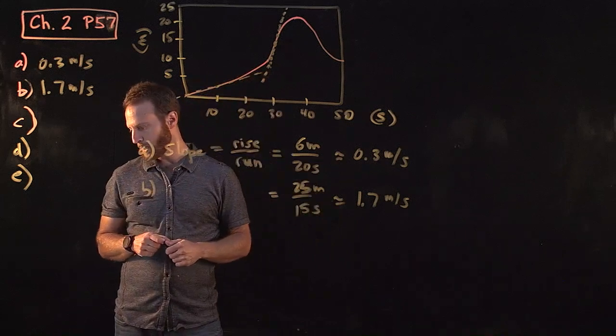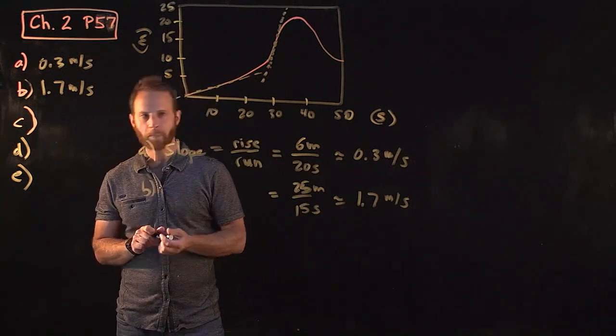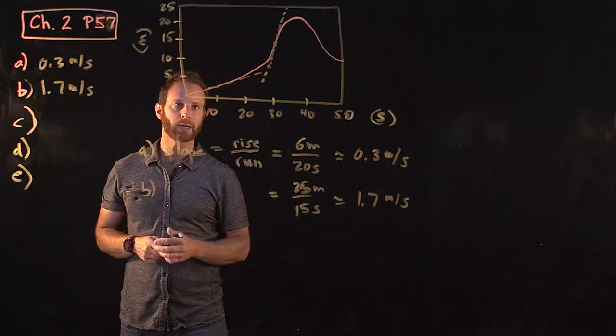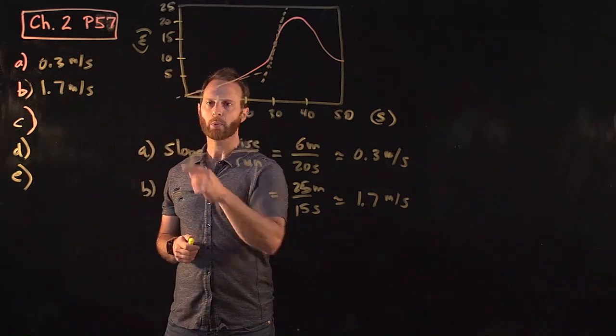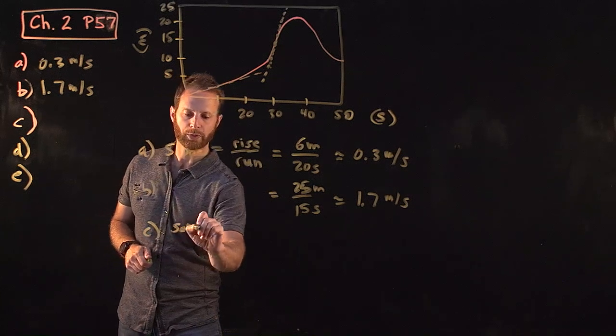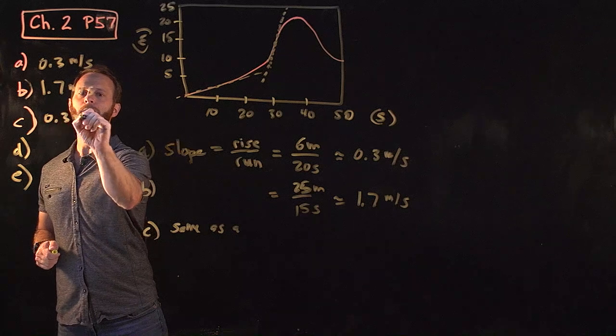Between 0 and 5 seconds, that's in that range where the curve is basically a straight line, so we should actually get the same number that we got in Part A. I'll just put same as A, about 0.3 meters per second.